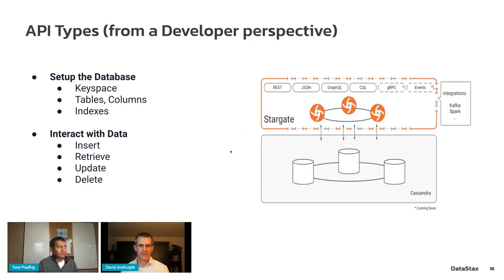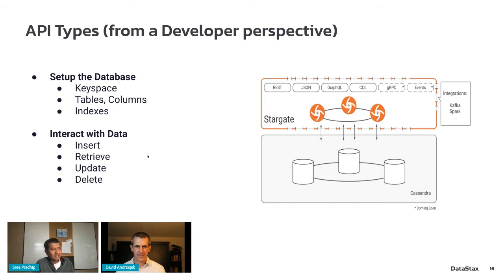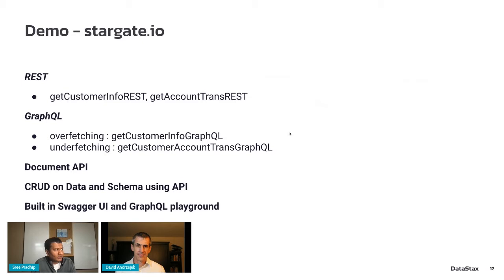From an API perspective, what's expected of providers is the ability to interact with the database at the schema level — setting up tables, creating indexes, doing database setup operations via APIs — and then the interaction with the data itself, doing all CRUD operations through API. That's how people are looking to build as API providers. The company we work for uses Cassandra as the database predominantly for all these real-time, high-speed transactions, and we've built a layer called Stargate that provides this API interface on top of it.